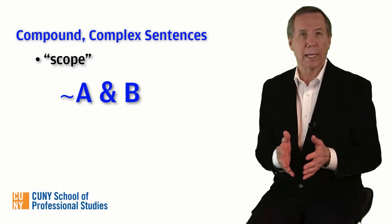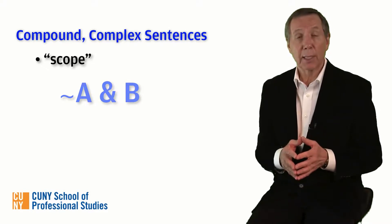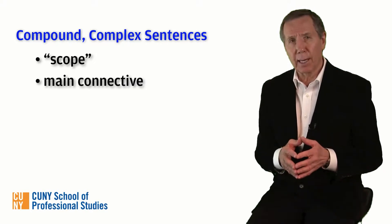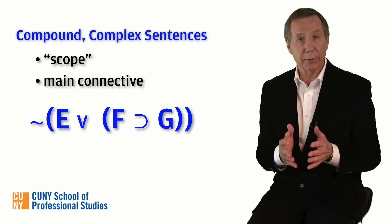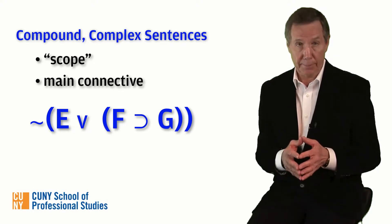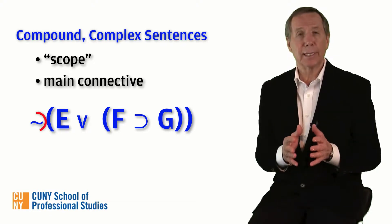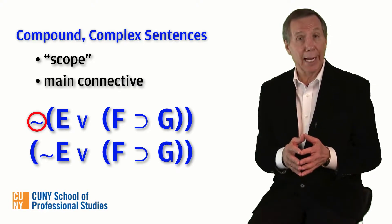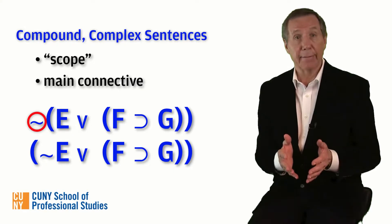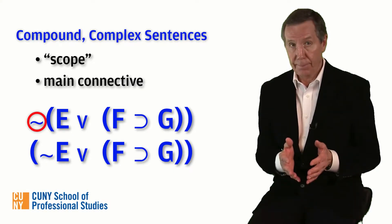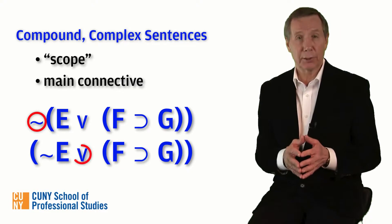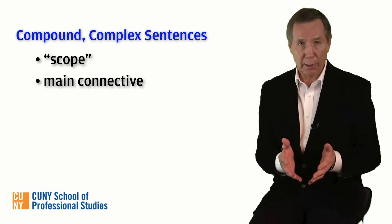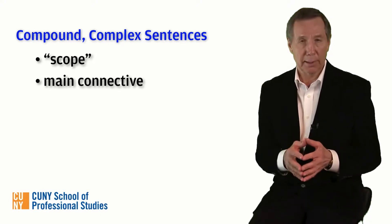Usually, the last connective that you add when you assemble a sentence is the main connective of that sentence. For example, the main logical operator of 'it is not the case that either E or if F then G' is negation, the tilde. The main logical operator of 'either not E or if F then G' is disjunction, the wedge or the V. The main connective of any sentence will have all the rest of the sentence included in its scope.